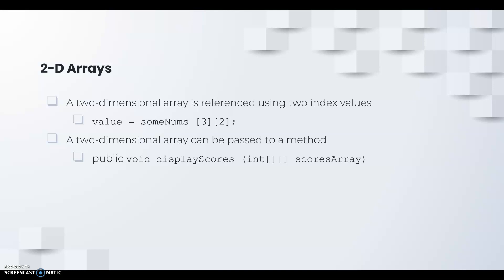A two-dimensional array is referenced using two index values. For example, right here we've got sumnums[3][2]. That means whatever element is at index position row 3, column 2 will be stored in the value variable.